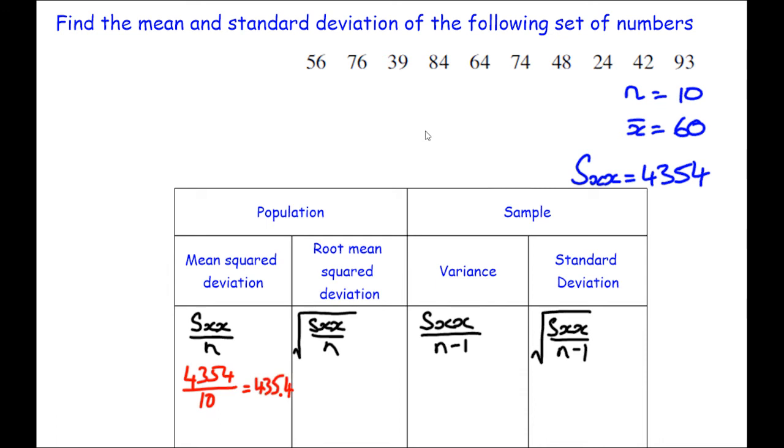The root mean squared deviation would be the root of the same calculation. And that gives us to two decimal places, 20.87.